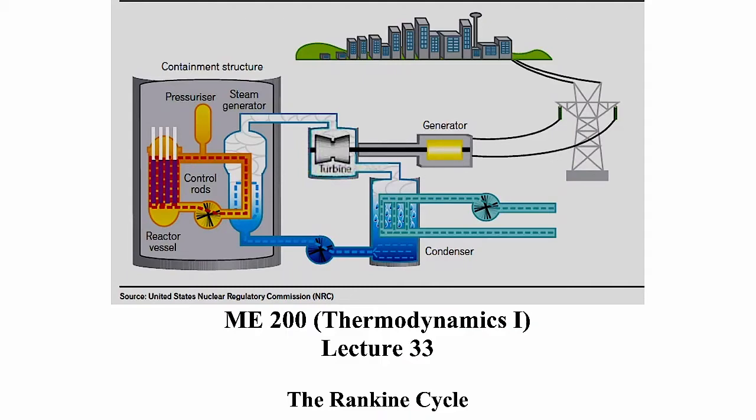The Rankine cycle is used in large power plants like gas-fired, coal-fired, nuclear, and even solar power plants — plants that use a working fluid like water that's turned into steam which then goes into a turbine. These typically operate on some version of what's known as a Rankine cycle. We've referred to it many times in previous lectures; we just never really called it a Rankine cycle.